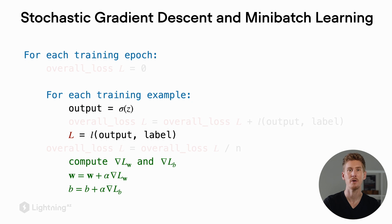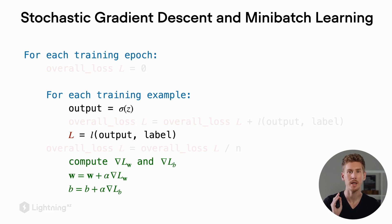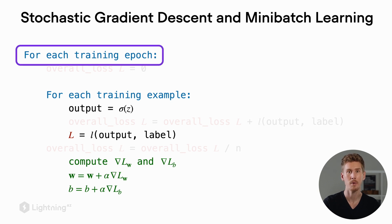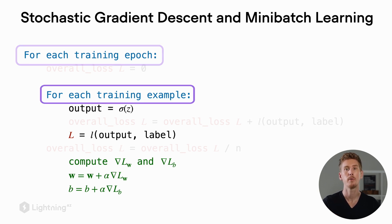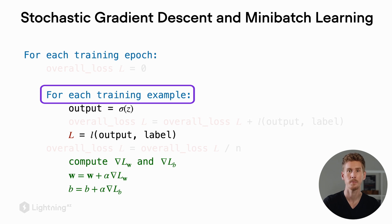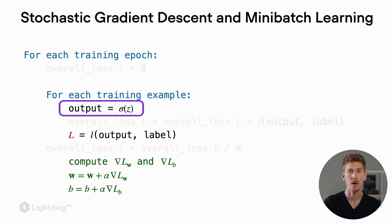Here's an outline of the stochastic gradient descent algorithm, and it is very similar to gradient descent with the main difference that we make an update after each training example. Similar to before, we have multiple training epochs, and in each training epoch we iterate over each training example and then compute the output using the sigmoid activation function.